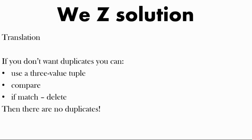So in translation, you don't want duplicates. There is a method — we'll call this the Wheezy solution, after the author of the code who came up with it. We use a free-value tuple and compare them. If you get a match, you delete the match, and there are no duplicates.